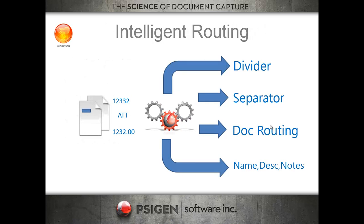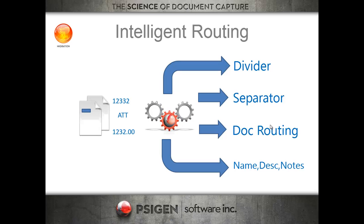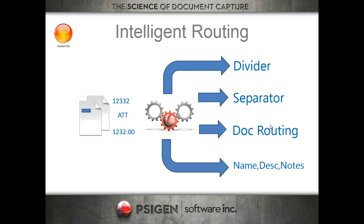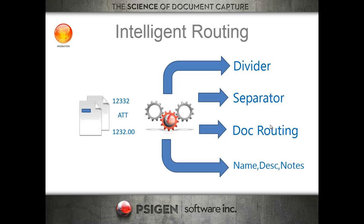A key component in SciCapture is what we call intelligent routing, or dynamic data. Once I collect information about a document — whether it's a characteristic or a piece of metadata to send to index fields in Filebound — I can also use that information to auto-set divider, separator, routing criteria, file name, description, and notes. All of those can be dynamically processed and different for every single document in the batch, making it a very dynamic way to build a repository in Filebound.